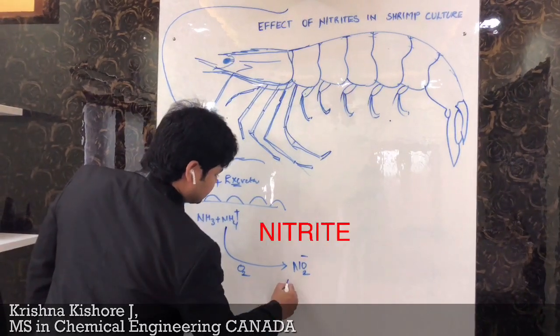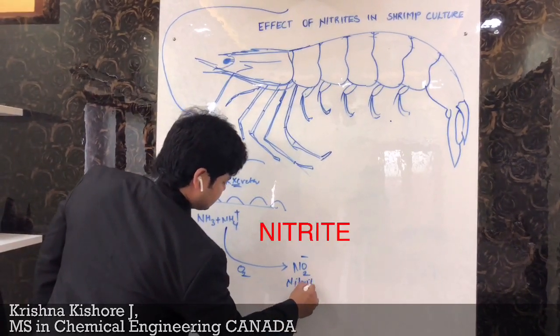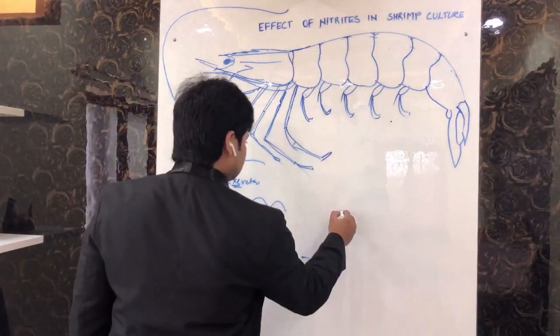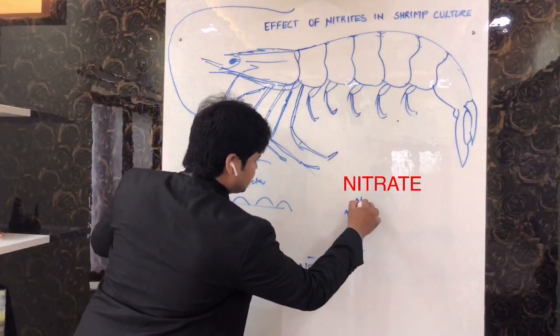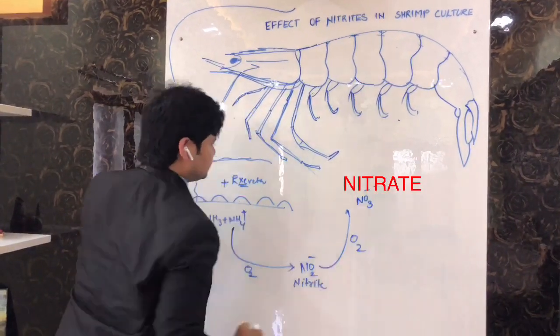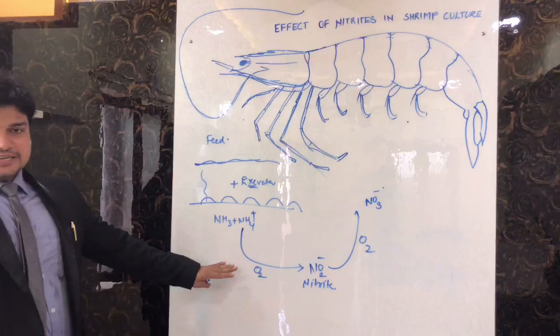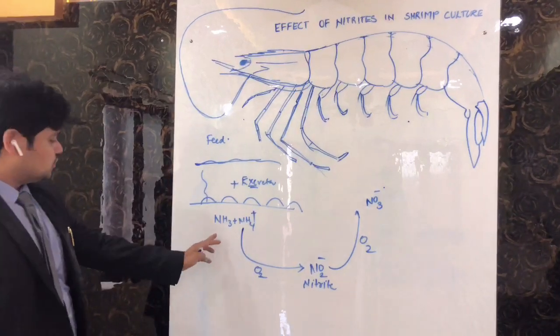The second step is it converts to nitrate, and the bacteria which converts ammonia to nitrite is ammonia oxidizing bacteria.